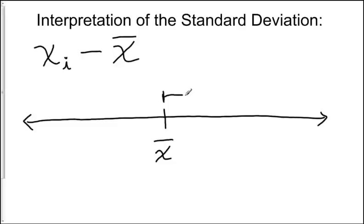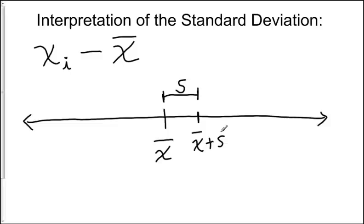If I start at X-bar and go to the right a distance of S units — the standard deviation — I get to a value labeled X-bar plus S. So this is, on average, how much each value above the mean would be from the mean. If you're within X-bar and X-bar plus S, you're a very average value, because the average distance from the mean is S.